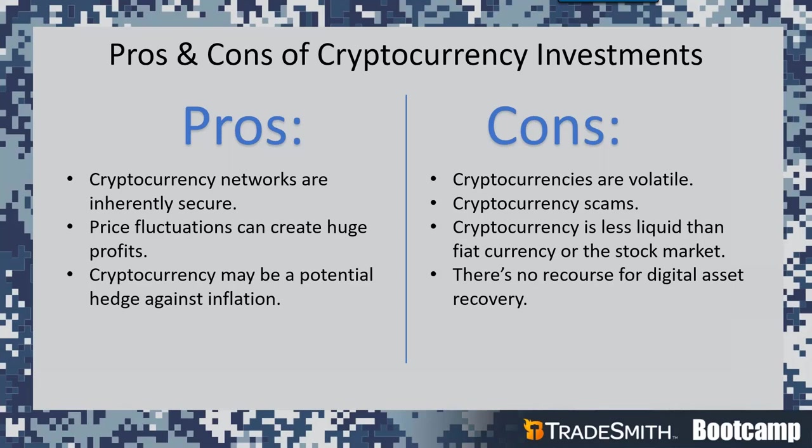Price fluctuations can create huge profits. This next pro may also be a con depending on how you look at it — with volatility comes the great potential for profit and also risk. The price of cryptocurrencies can fluctuate greatly from just a mention of a specific coin on a social media site. The last pro is that cryptocurrency may be a potential hedge against inflation.